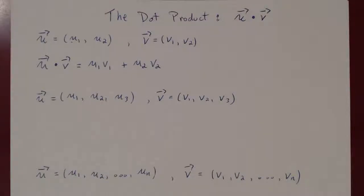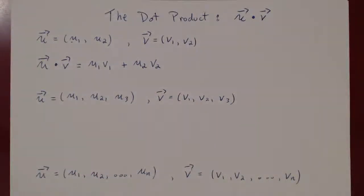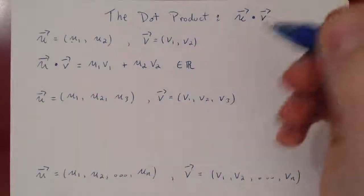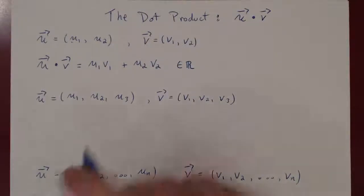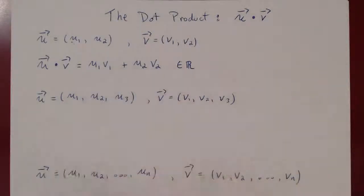Doesn't that vaguely sound like matrix multiplication? How do we multiply a row times a column? We multiply corresponding entries and we add them up. And this is what the dot product is. This is a purely algebraic operation on vectors, and the result is a real number. What's neat is this is really just matrix multiplication. We'll look at this first algebraically, and then we'll realize there is a really subtle but deep geometric meaning hiding in this simple-looking algebraic operation.